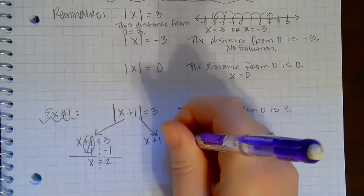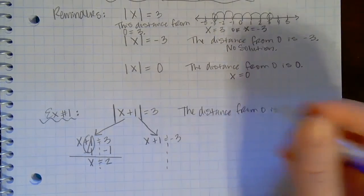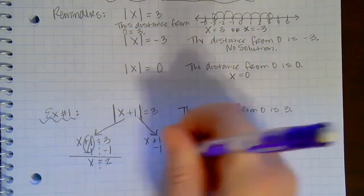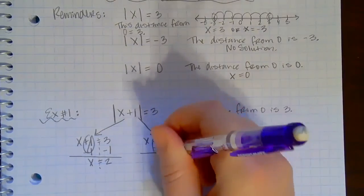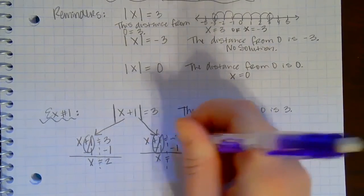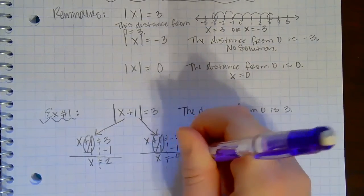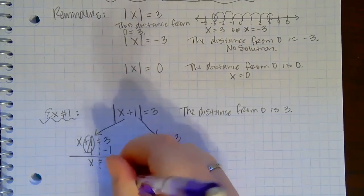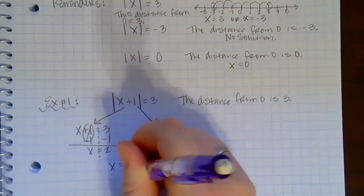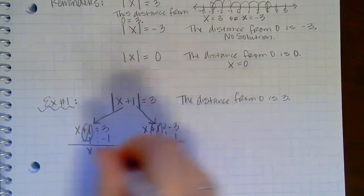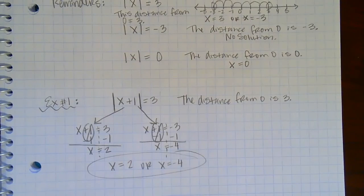Same over here. Draw my line down my equal sign. It's adding 1, so the opposite of adding 1 is subtracting 1. 1 minus 1 is 0. Bring down the x. Negative 3 minus 1 is negative 4. So my two solutions are: x could be either positive 2, or x could be negative 4. Those are my final solutions.